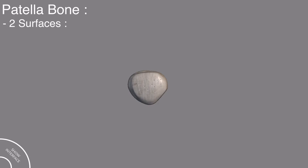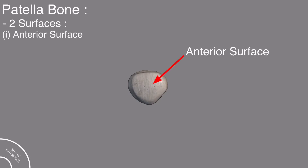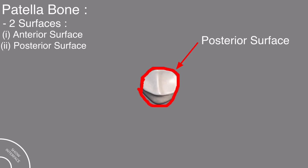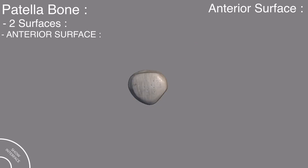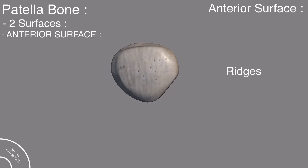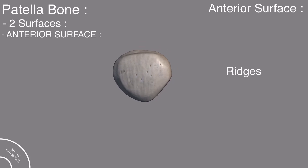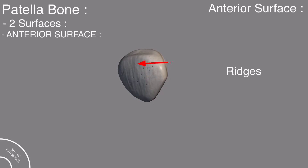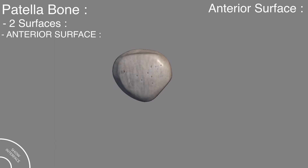Now we come to the two surfaces of the patella bone. The patella bone has the anterior surface and the posterior surface. The anterior surface of the patella bone has many longitudinal ridges. These ridges are more prominent when viewed from the side, and these ridges are the identification of the anterior surface.